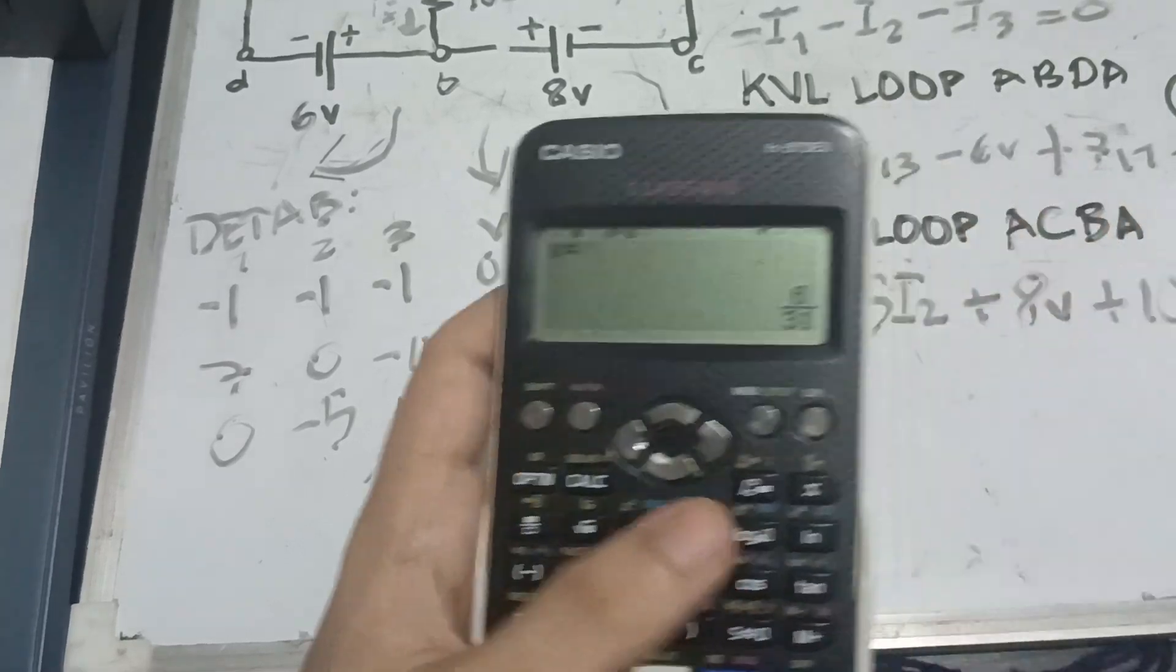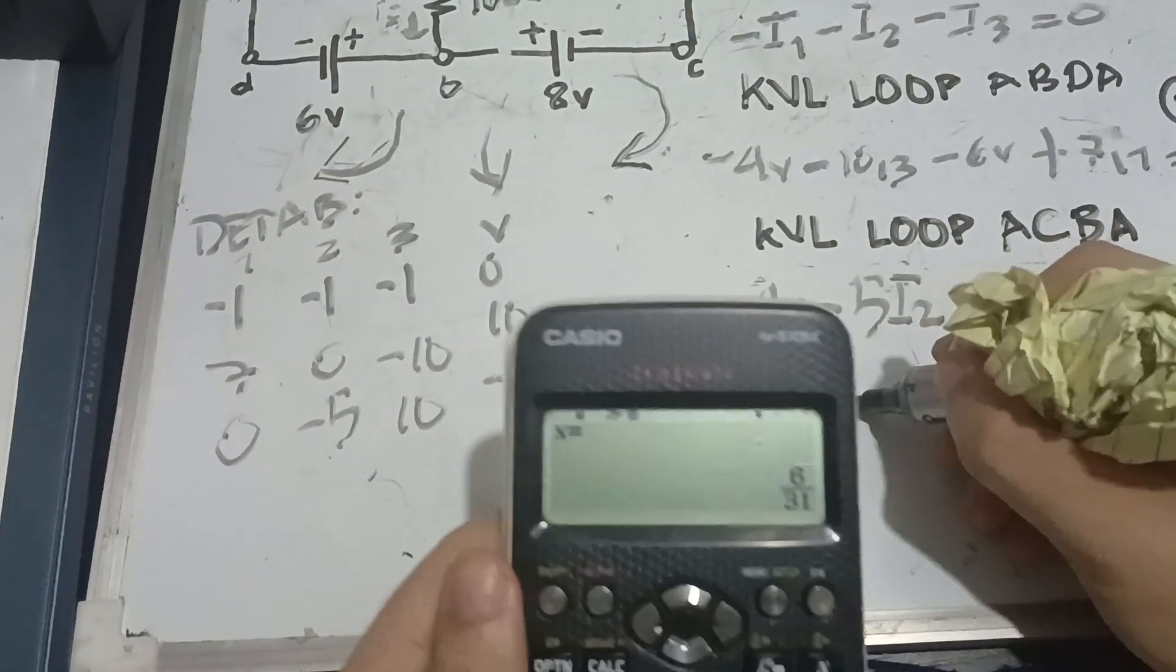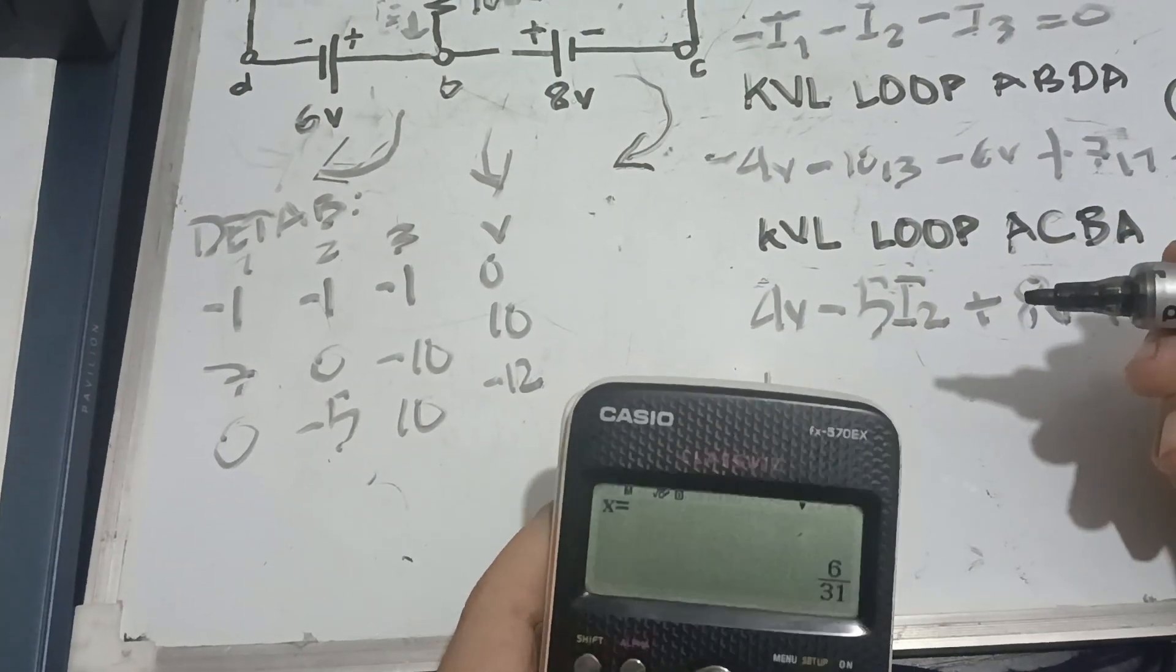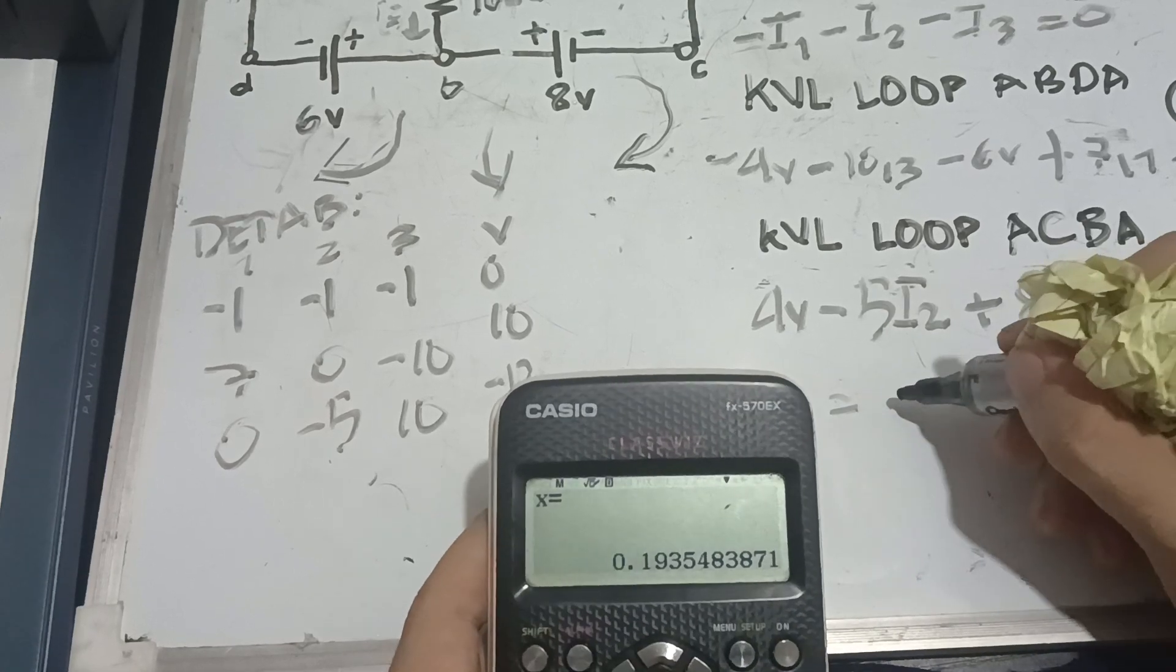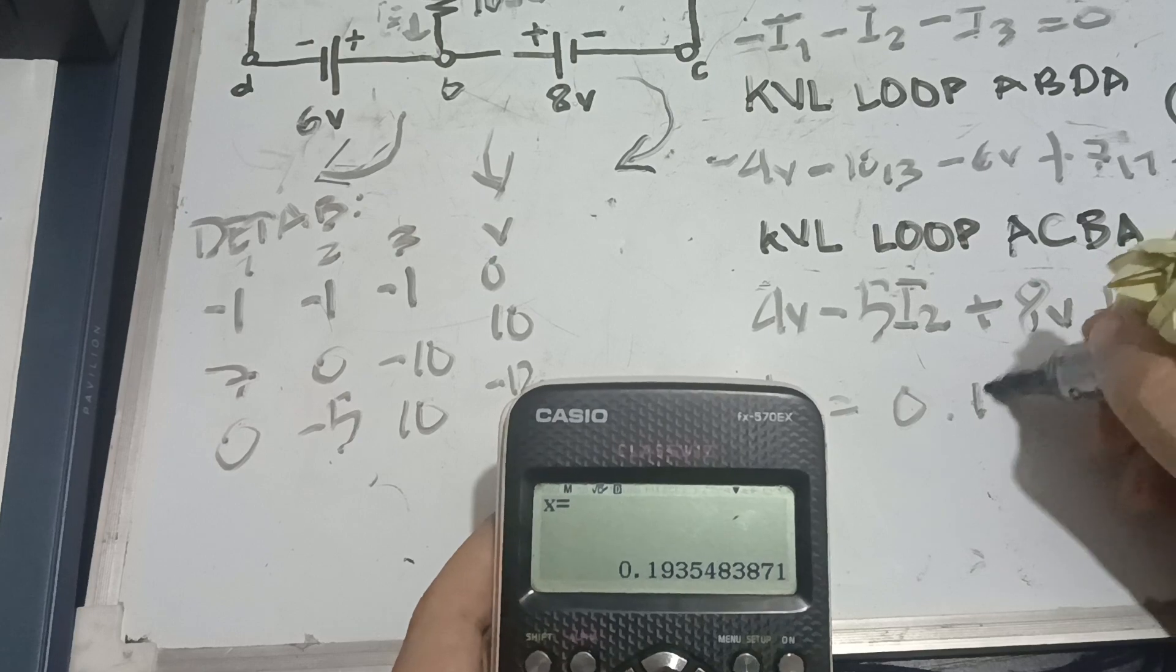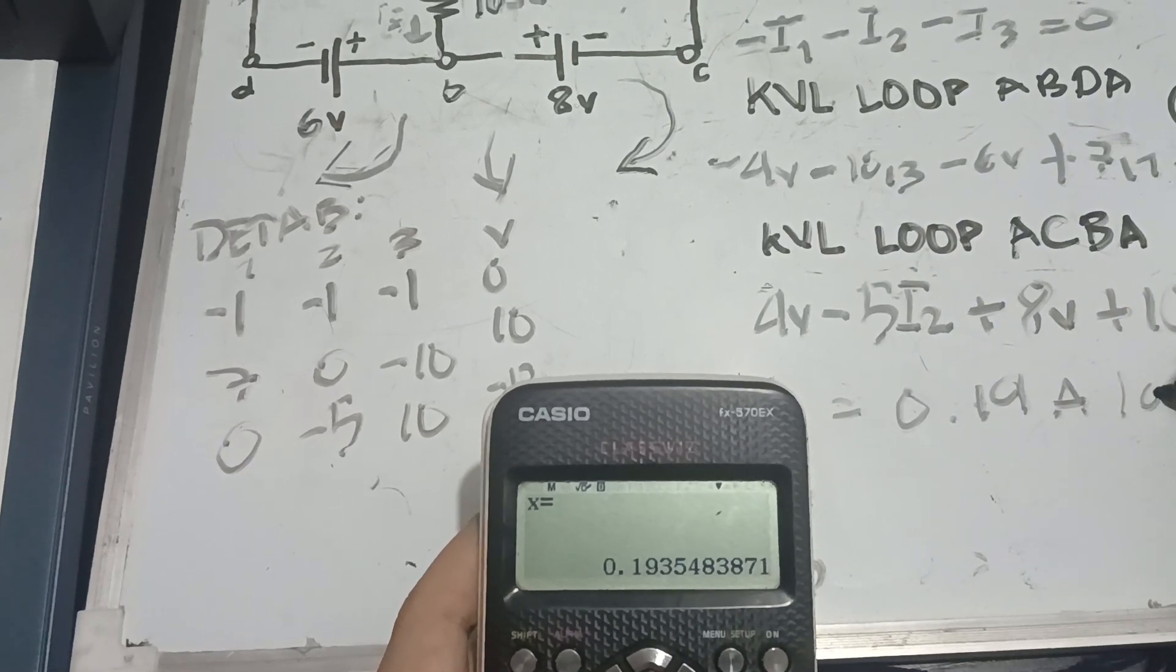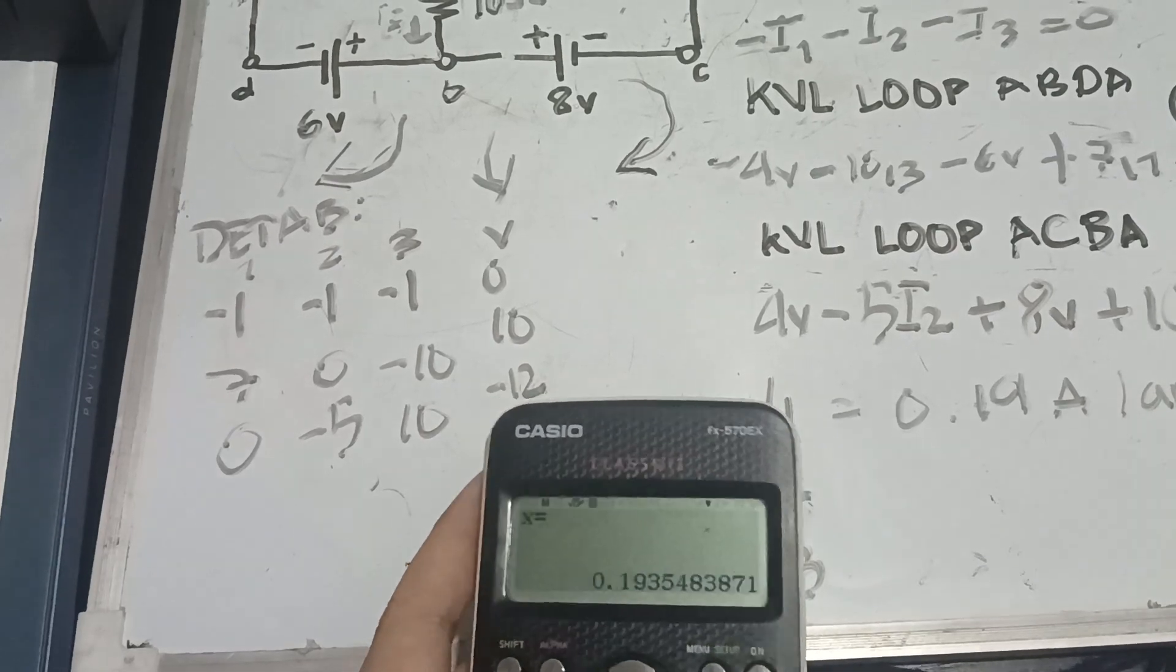Now, we have here our answers. For the first one. So, for our I1, or our X, we have 6 over 31. Or, we need it in decimal form. So, it's going to be 0.19 amp. Whatever you like. Or, amperes.